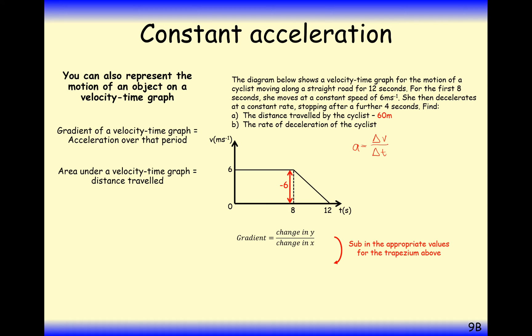In this case here, we're changing by negative 6 on the velocity, and 4 seconds have gone past. So our gradient here is minus 1.5. Therefore, the deceleration is 1.5, or you could also say there that the acceleration is minus 1.5.